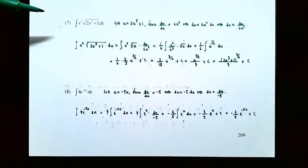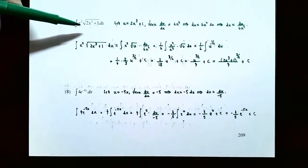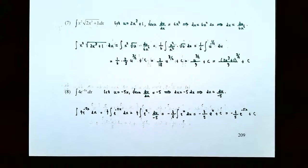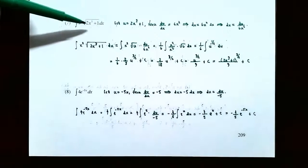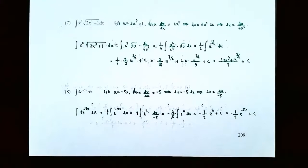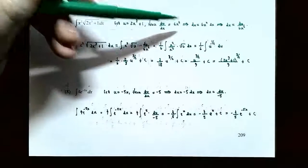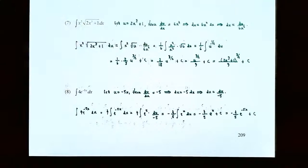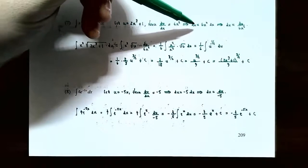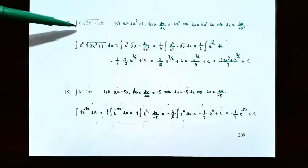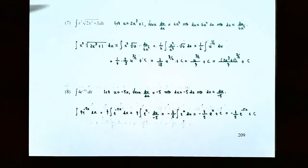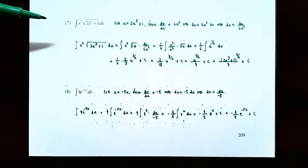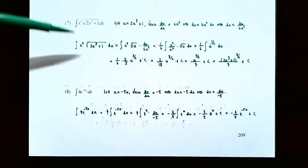Number 7: dealing with a radical function. The indefinite integral of x² times the square root of (2x³ + 1) dx. It's not just square root of x — the inside function is 2x³ + 1, so let u = 2x³ + 1. The derivative: du/dx = 6x². Multiplying both sides by dx: du = 6x² dx. Since you only have x² dx, solve for dx: dx = du / (6x²).